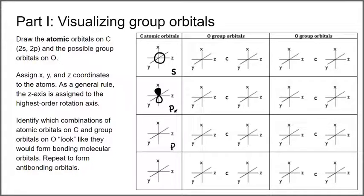For the py orbital, that one is along the y-axis, which is coming in and out of the screen toward us. Then the pz orbital is along the bonding axis — the z-axis — and it's partially shaded to show the difference in sign of the wave function. The z-axis is the bonding axis, oriented sideways to show that it connects with the oxygens.